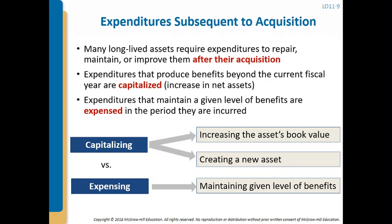You could have a situation where capitalization increases the asset's book value, or where an expense is capitalized because it is considered to be creating a new asset. Expensing immediately just means that it maintains whatever given level of benefits you expected in the first place.